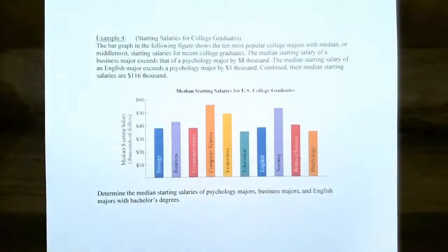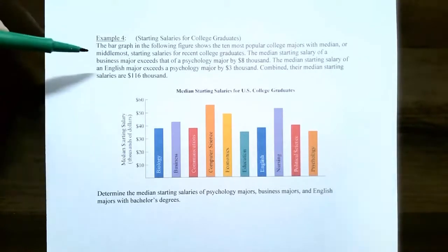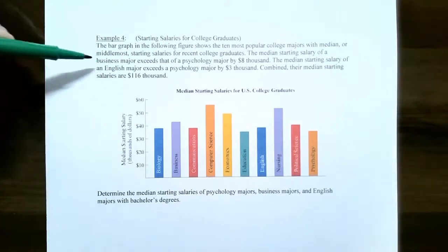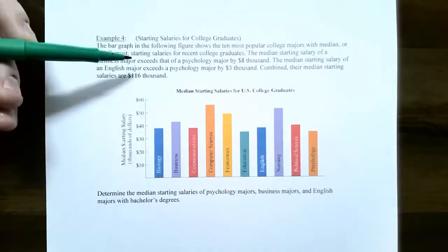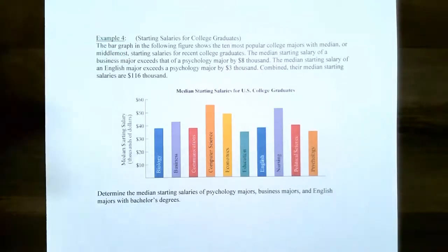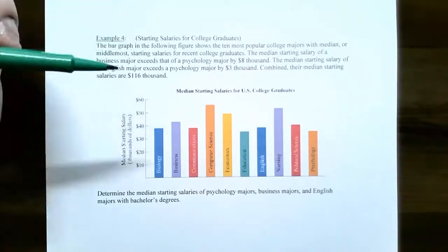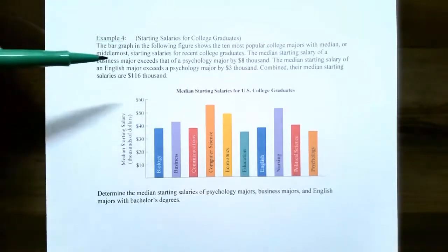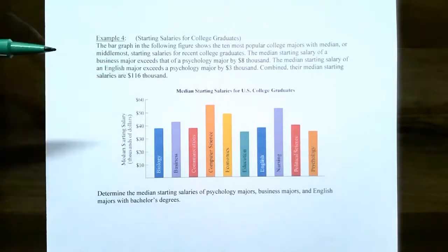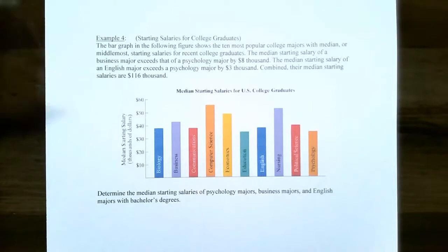Let's start with example four. The bar graph in the following figure shows the 10 most popular college majors with median — or in terms of statistics, the middlemost — starting salaries for recent college graduates. The median starting salary of a business major exceeds that of a psychology major by $8,000. The median starting salary of an English major exceeds a psychology major by $3,000. Combined, their median starting salaries are $116,000.